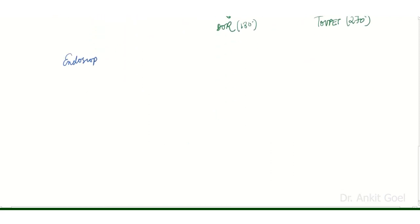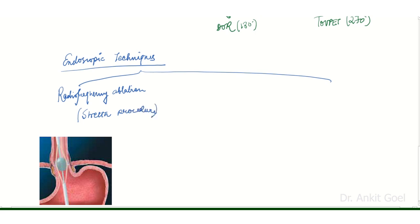Recently, various endoscopic techniques have been described. The first is radiofrequency ablation, also known as the Stretta procedure. In it, radiofrequency energy is applied to cauterize the esophageal muscles and cause fibrosis, thereby tightening the gastroesophageal junction and preventing reflux.